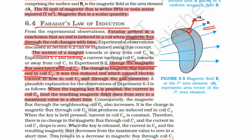It is this induced EMF which causes electric currents to flow in coil C1 and through the galvanometer, and we see a deflection in the galvanometer. The same thing happens when tapping key K is pressed — the current in coil C2 and the resulting magnetic field rises from zero to a maximum value in a short time.